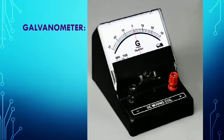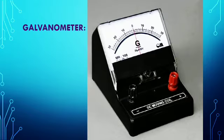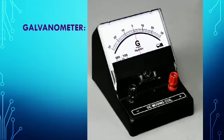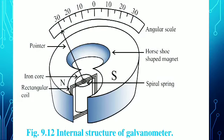This device is called a galvanometer. As we have already studied its use in meter bridge and Kelvin's method, you can see a pointer is at zero — this condition is called the balance condition, and the point is called the null point. There are two knobs, a black one and a red one, used for electrical connection. Basically, a galvanometer is a device used to detect a weak electric current.